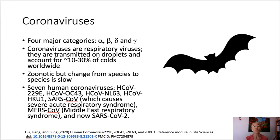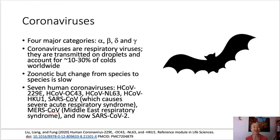The 'CoV' part of the name stands for coronaviruses. There are four major categories of coronaviruses: alpha, beta, gamma, and delta. It's a very uppity way to talk about the names of the viruses, but SARS-CoV-2 is a beta coronavirus.